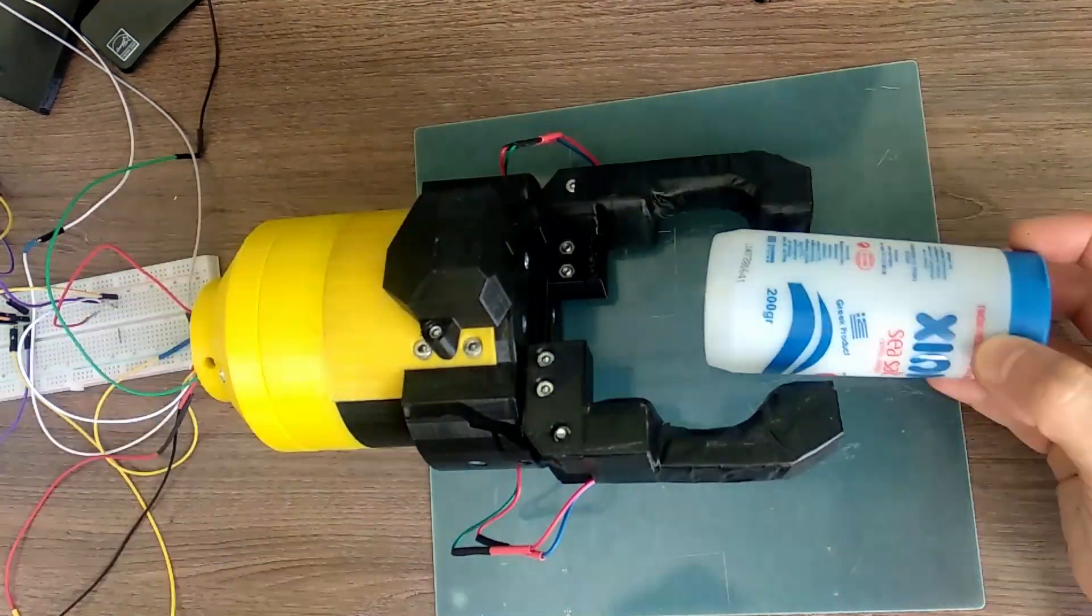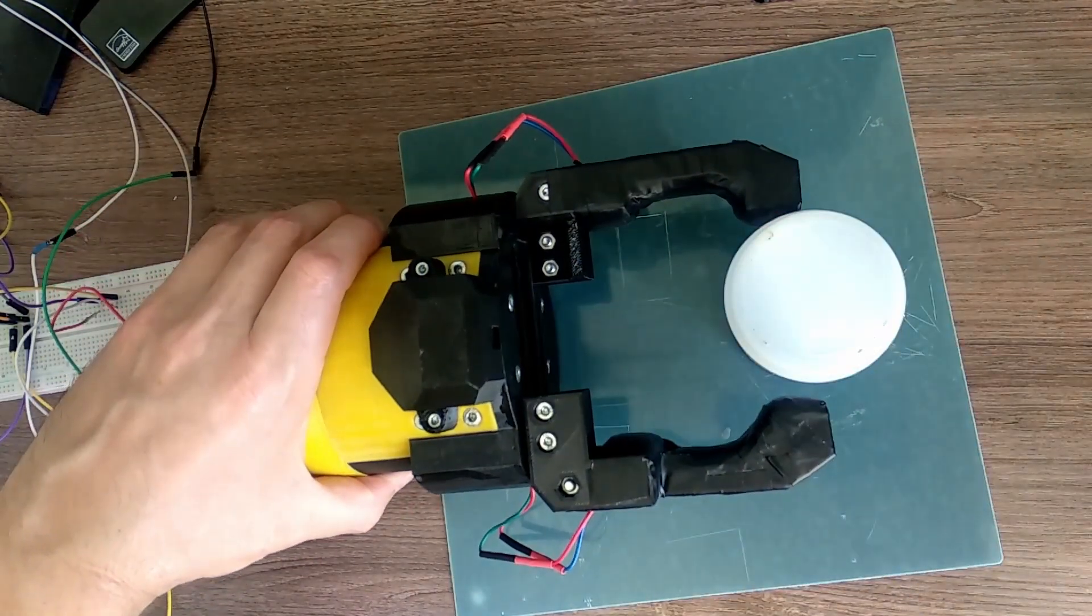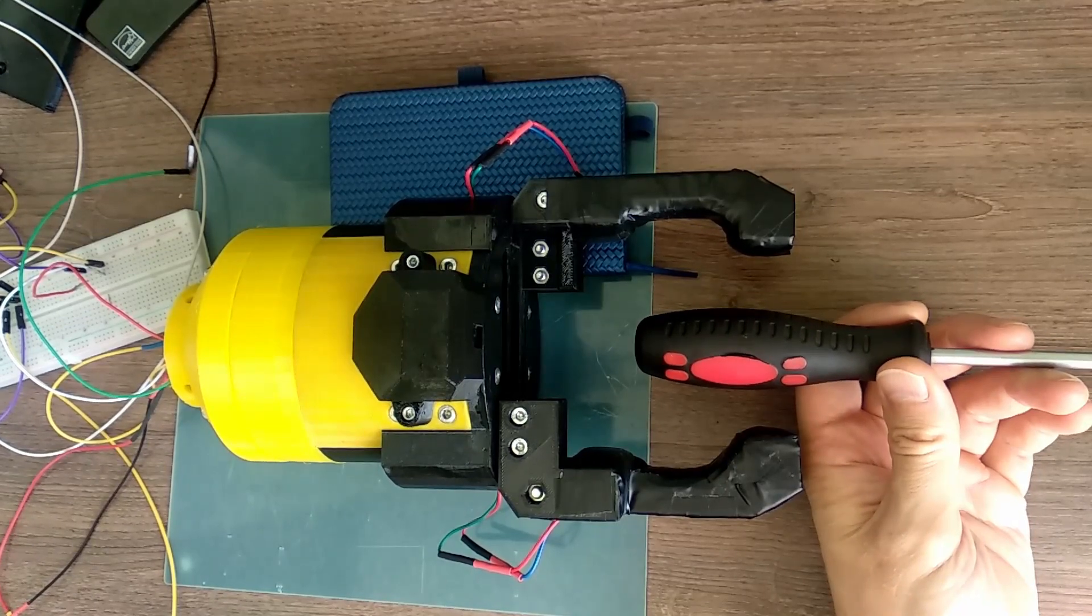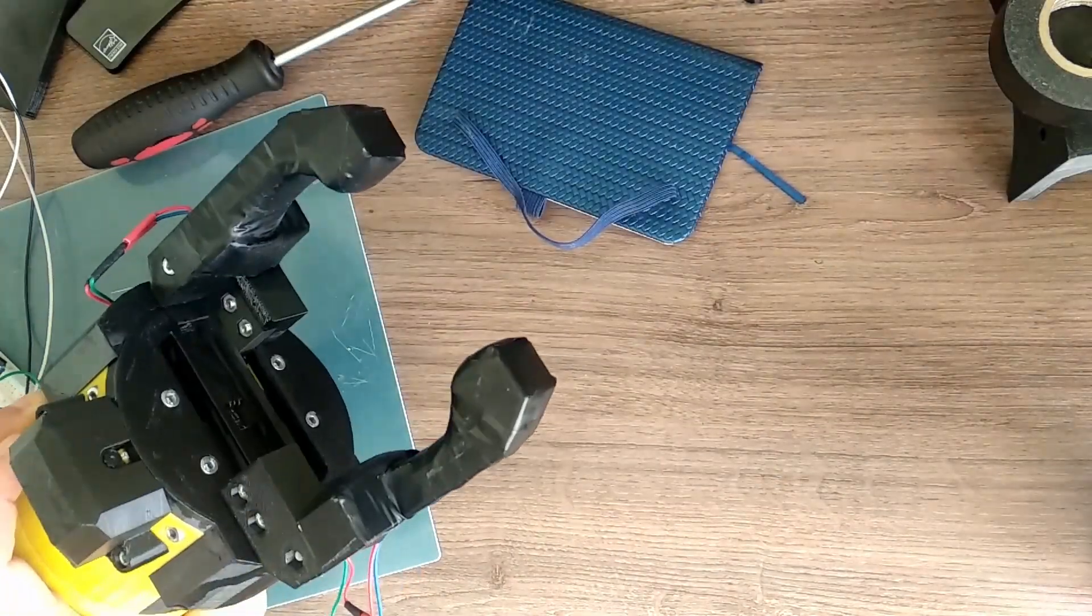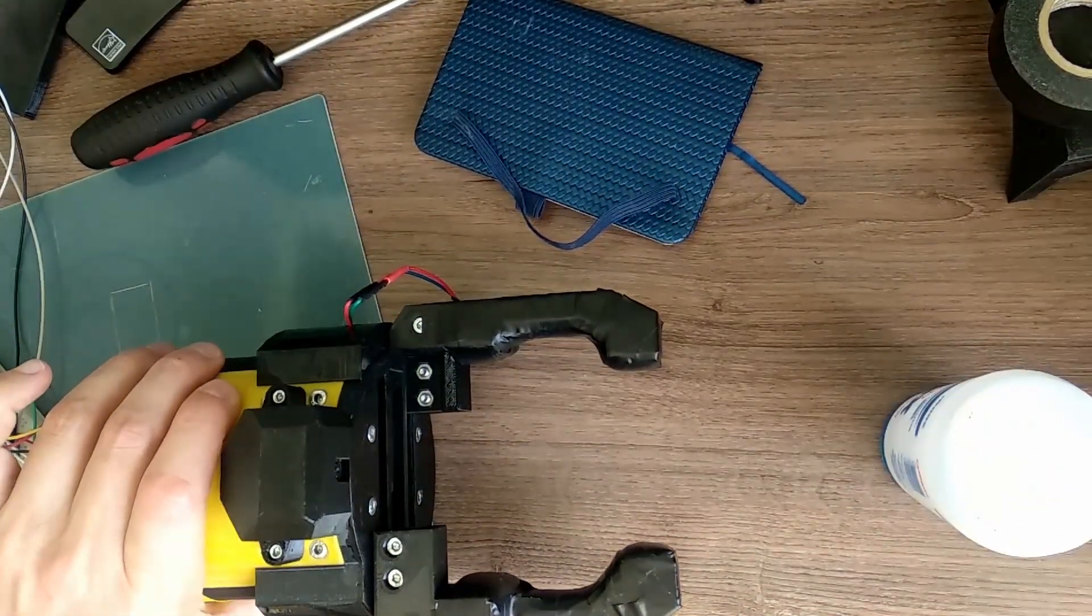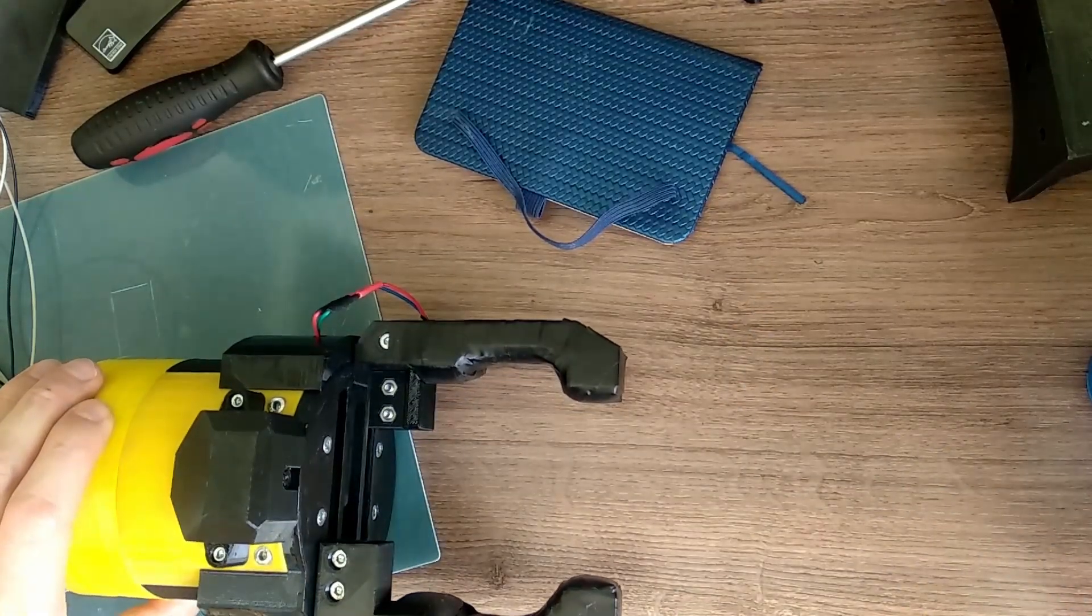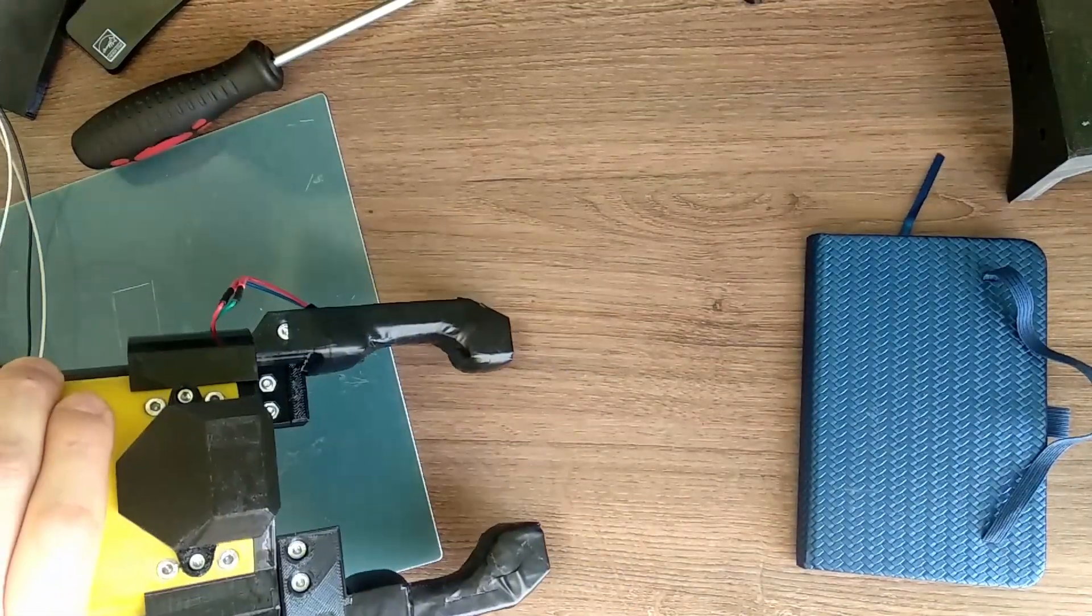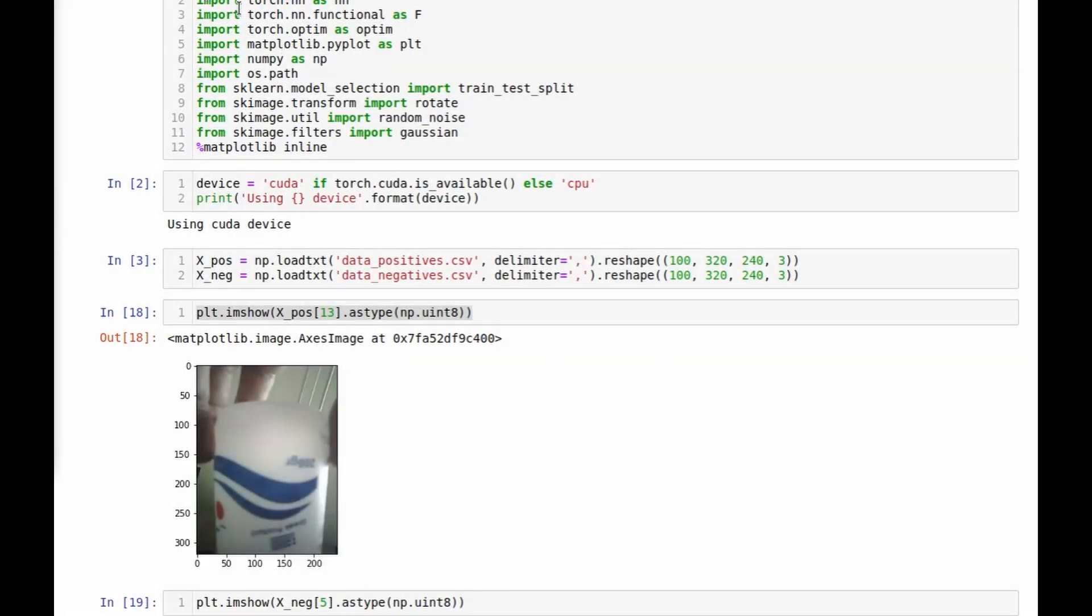And now as an example of how gripper camera can be used, I'd like to show you some machine learning experiments that I've conducted. Here I'm collecting a data set of images of different objects which are in position when they can be grasped by the gripper. Also I've collected a data set of images of different backgrounds and also of different objects which are far from the gripper and cannot be grasped. You must have already guessed that I'm going to try an image classifier with these images, and I'm going to use PyTorch for that.